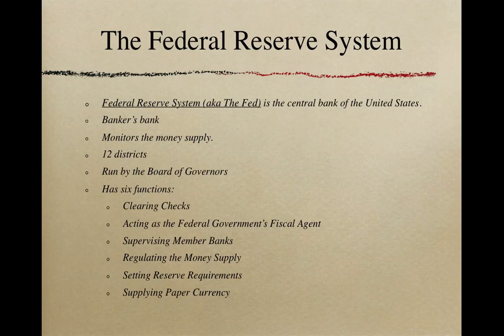The Federal Reserve has six functions. The first one: clearing checks. Funds are transferred from one bank to another when someone writes or deposits a check. Number two: acting as the federal government's fiscal agent. The Federal Reserve distributes money to Federal Reserve member banks and commercial banks. It also tracks deposits and holds a checking account for the United States Treasury.